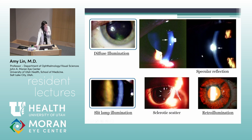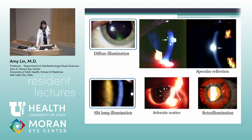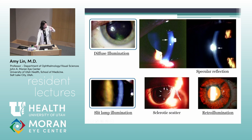Specular reflection is most commonly used to examine fine details around the endothelium: you have the beam at a very high intensity at about a 60-degree angle, superimpose the light bulb reflex with the slit beam, focus in, and you can see reflections to look at endothelial cells. Sclerotic scatter involves a very intense bright beam aimed at the limbus at an angle that lights up the entire cornea, highlighting subtle corneal scars that wouldn't otherwise be visible with direct illumination.